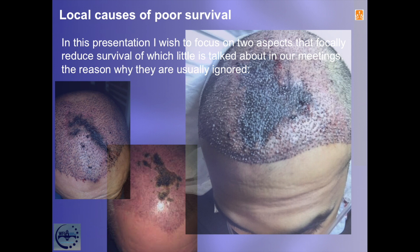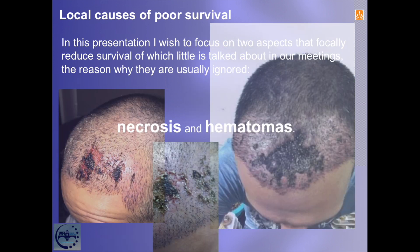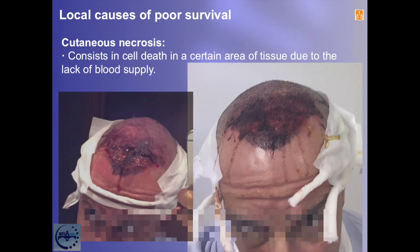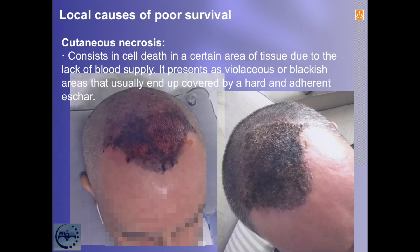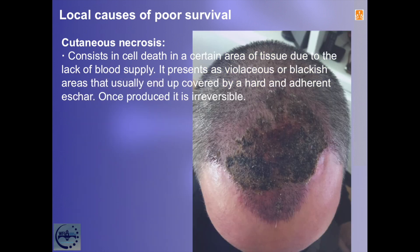In this presentation I wish to focus on two aspects that focally reduce survival, of which little is talked about in our meetings — which is why they are usually ignored: necrosis and especially hematomas. Cutaneous necrosis consists of cell death in a certain area of tissue due to lack of blood supply. It presents as violaceous or blackish areas that usually end up covered by a hard and adherent eschar. Once produced, it is irreversible.